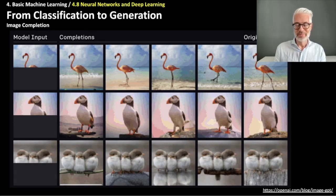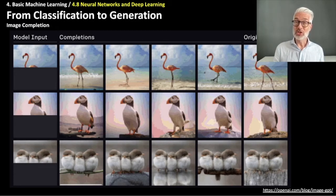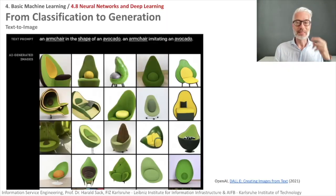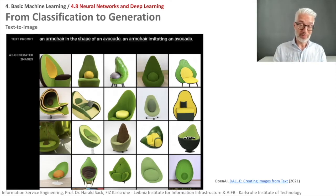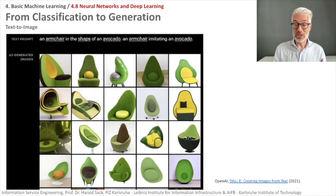What is most impressive now is the capability of really complex language models to create pictures — this interconnection and multi-modality. There is a famous project called DALL-E, recently published in 2021. You make a statement and the system tries to imagine an image fitting your description. For example, the system should create an armchair in the shape of an avocado. There was certainly no avocado armchair in the training data — this is purely imagined, and it is really amazing, as if the network would think and imagine.